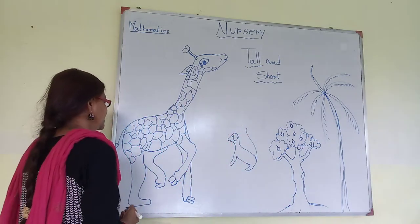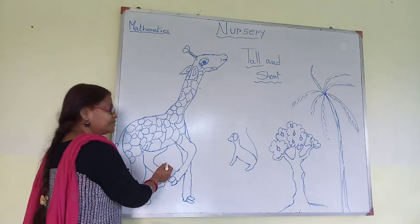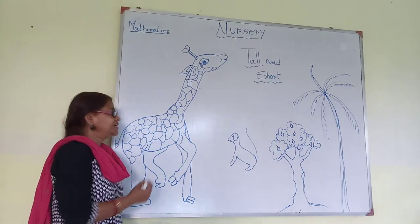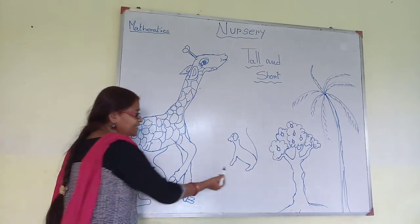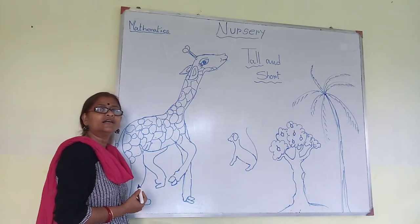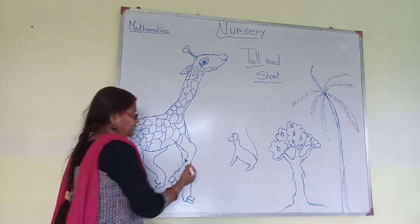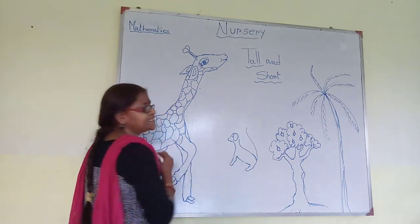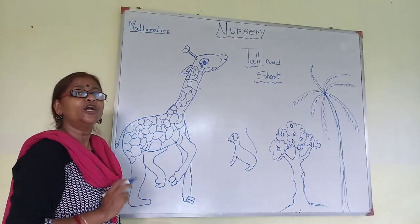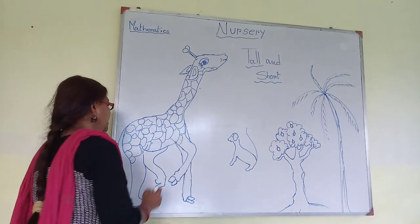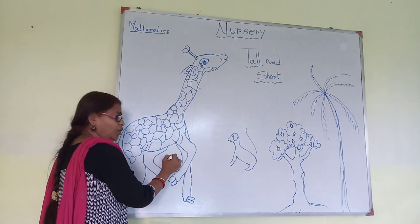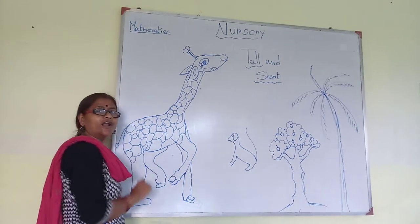Look at the board. Jeera is a tall animal. Jeera is taller than dog. So, in between dog and jeera, jeera is the tall animal. This is tall, this is tall, this is tall.